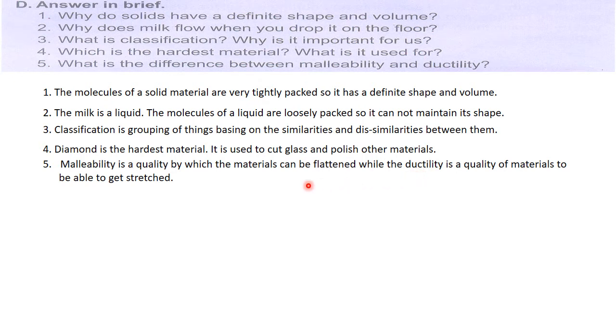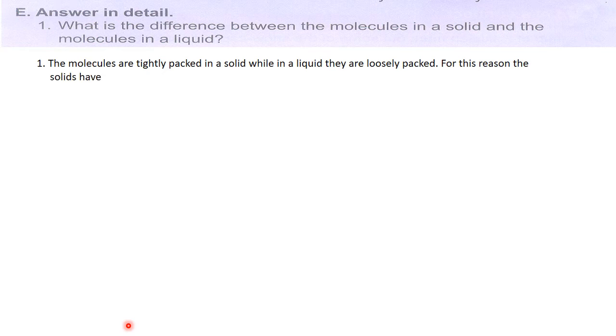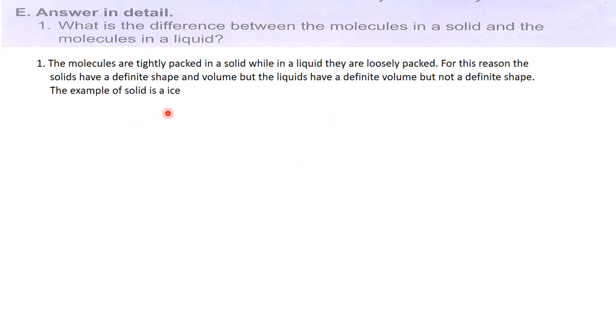Answer in detail: what is the difference between the molecules in a solid and the molecules in a liquid? The molecules are tightly packed in a solid while in a liquid they are loosely packed. For this reason, the solids have a definite shape and volume, but the liquids have a definite volume but not a definite shape. The example of solid is an ice cube or brick, while of liquid is water or milk.